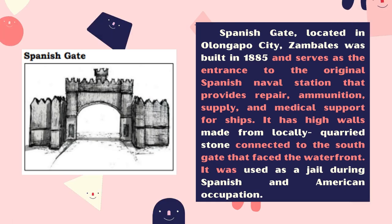Spanish Gate, located in Olongapo City, Zambales, was built in 1885 and serves as the entrance to the original Spanish naval station that provided repair, ammunition, supply, and medical support for ships. It has high walls made from locally acquired stone connected to the south gate that faces the waterfront. It was used as a jail during Spanish and American occupation.